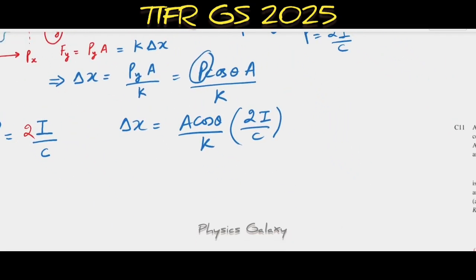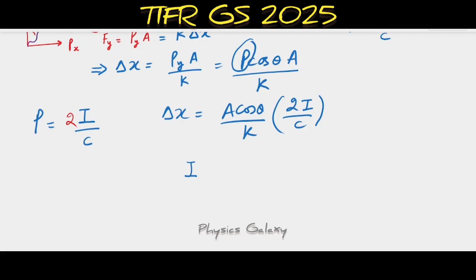The intensity of light is given by one-half ε₀c times E₀ squared, and it is averaged over a cycle.